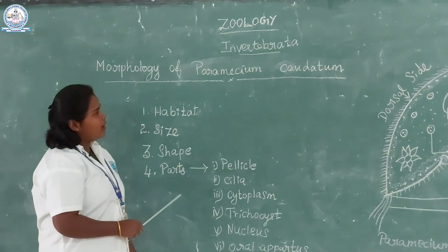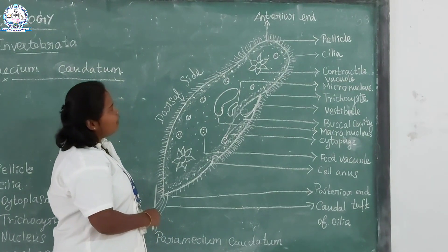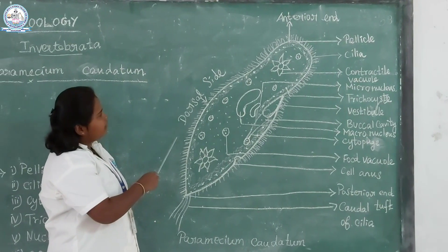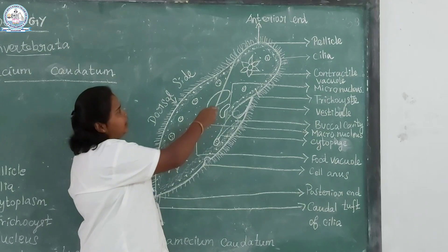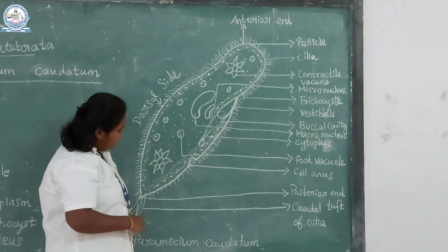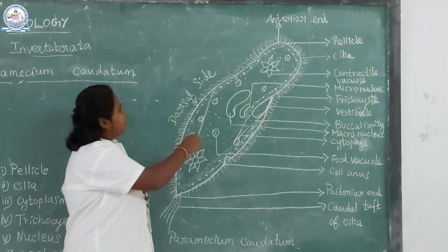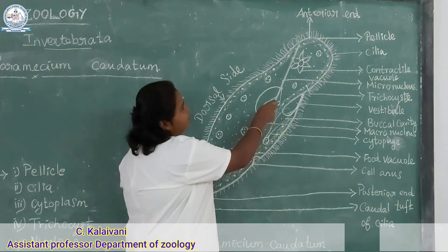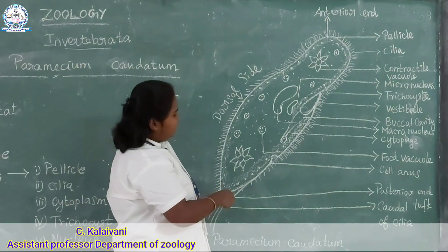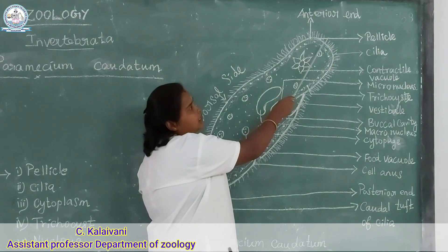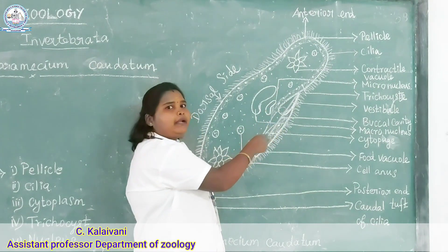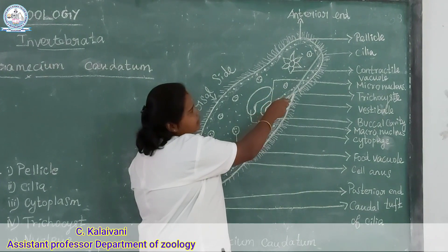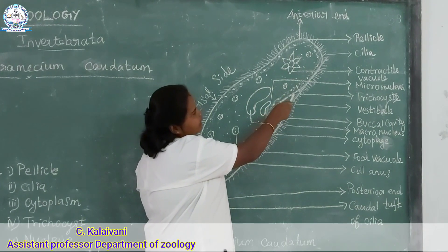Next, the major parts. The body has four regions: anterior end, posterior end, dorsal side, and ventral side. The anterior end is blunt and the posterior end is pointed. The dorsal side is convex and the ventral region is flattened. First of all, the body is fully covered by a thin elastic membrane called the pellicle. This pellicle gives structure and protection to the organism. Second, the pellicle gives rise to numerous hair-like structures called cilia.